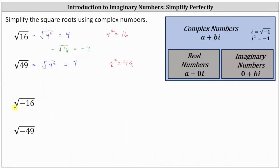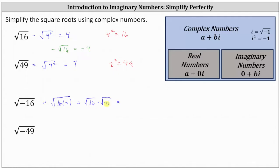Next, we have the square root of negative 16. In this case, there is no real number squared equal to negative 16, which indicates the square root is equal to an imaginary number. Because negative 16 equals 16 times negative one, we write the square root of negative 16 as the square root of 16 times negative one, which equals the square root of 16 times the square root of negative one. The square root of 16 is four, and by definition the square root of negative one is i, so the square root of negative 16 is equal to four i.